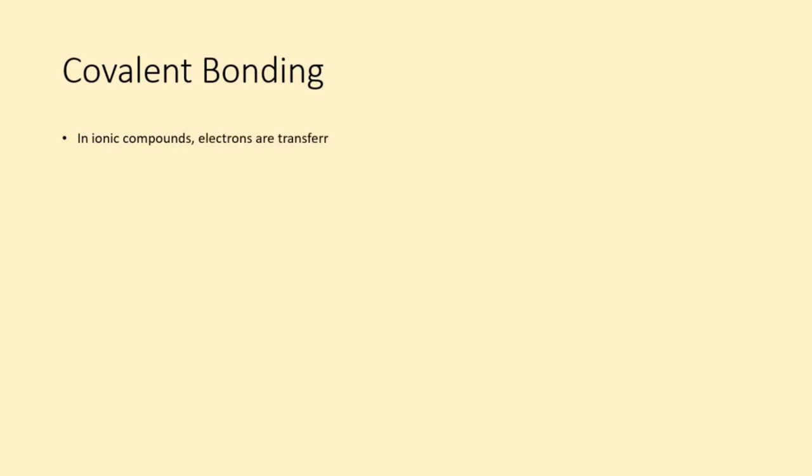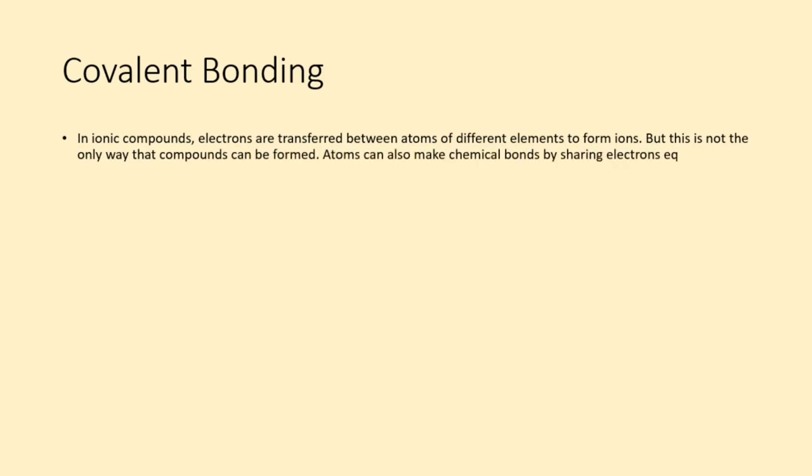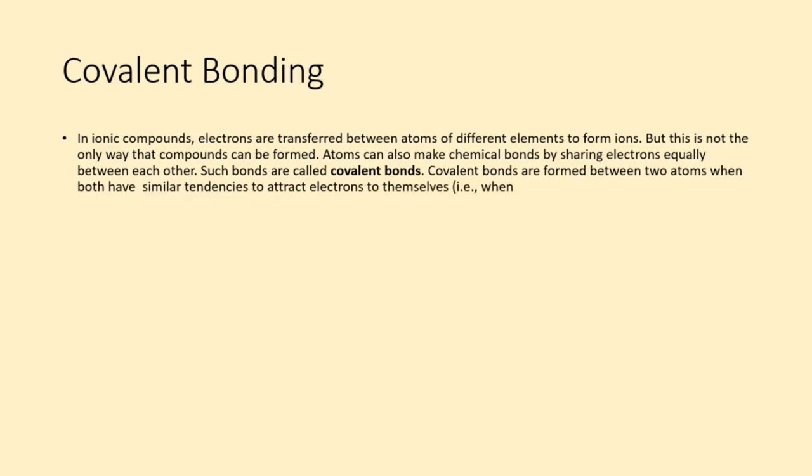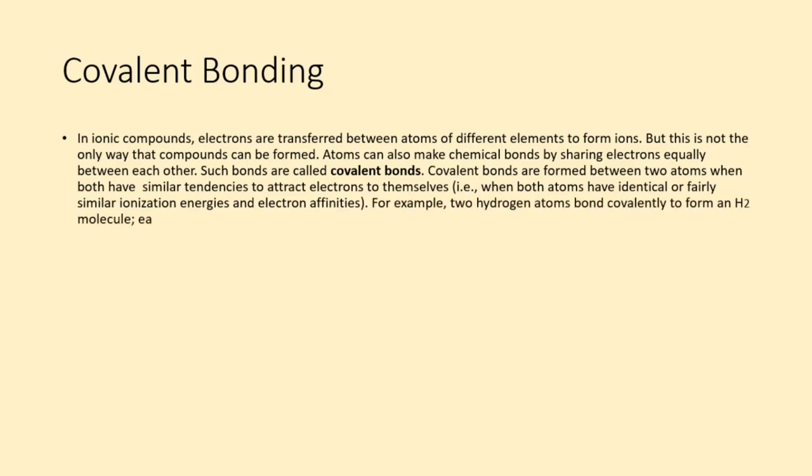In ionic compounds, electrons are transferred between atoms of different elements to form ions. But this is not the only way that compounds can be formed. Atoms can also make chemical bonds by sharing electrons equally between each other. Such bonds are called covalent bonds. Covalent bonds are formed between two atoms when both have similar tendencies to attract electrons to themselves, i.e., when both atoms have identical or fairly similar ionization energies and electron affinities. For example, two hydrogen atoms bond covalently to form an H2 molecule. Each hydrogen atom in the H2 molecule has two electrons stabilizing it, giving each atom the same number of valence electrons as the noble gas He.